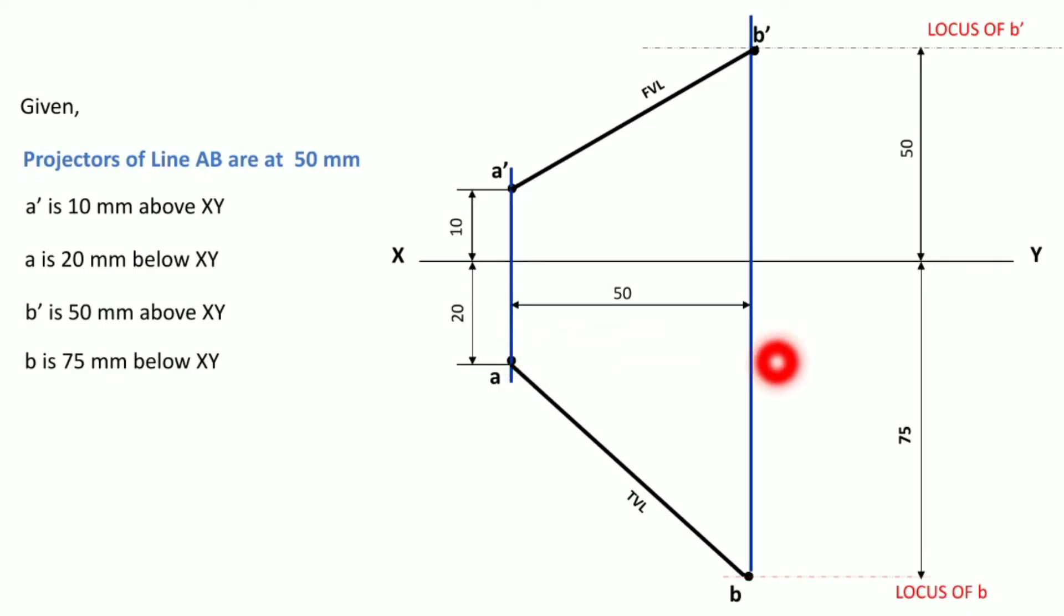We can have here plan length from point A which will be parallel to XY line, because the plan length is equal to top view length in measurement. So by taking point A as center and AB as radius, draw an arc from point A. Here you get point B1 and this length is called plan length.